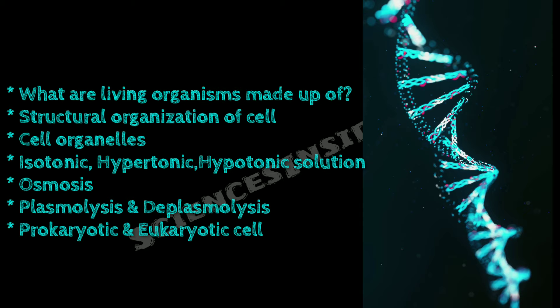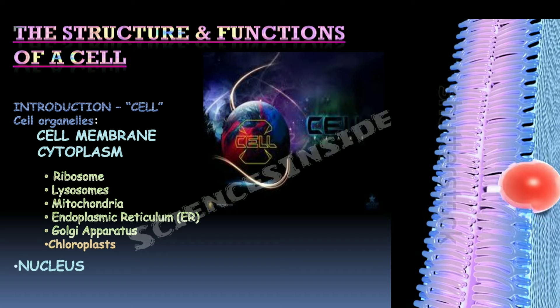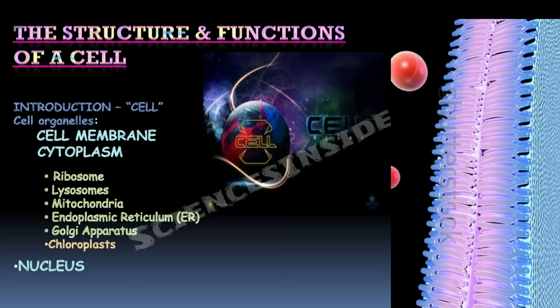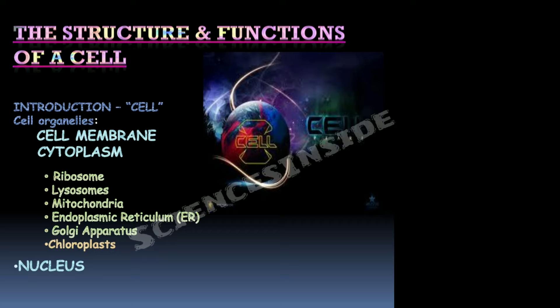Let's start with the structure and function of a cell. We are going to cover the introduction and various cell organelles. First is the cell membrane, then cytoplasm — which contains all the organelles mentioned — and then we'll study in detail about the nucleus.